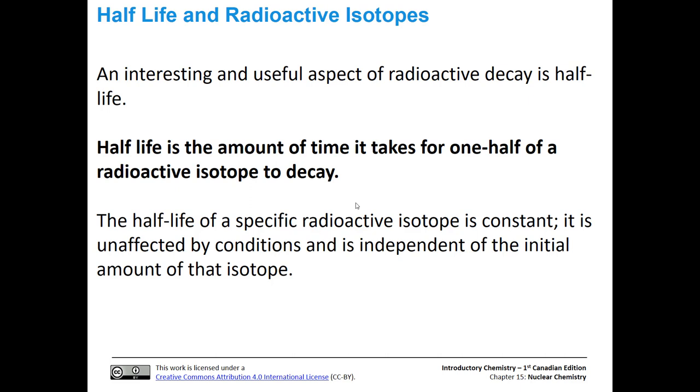For any given specific radioactive isotope, that half-life is constant. It's always the same. It's unaffected by conditions and is independent of the initial amount of that isotope. In other words, the half-life is going to be the same whether you have 500 grams of a given isotope, or only 100 grams, or even 5 grams, or even half a gram. That half-life is always going to be the same.